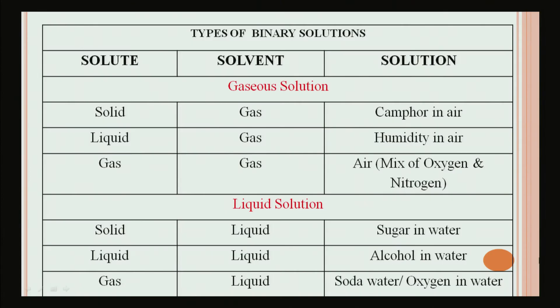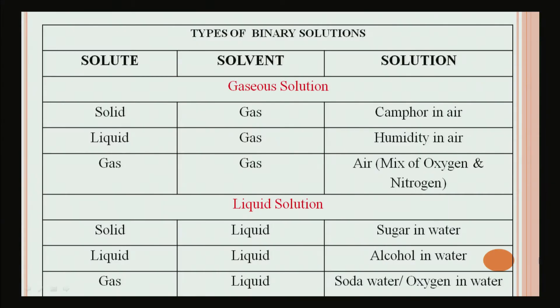Looking at the chart, solute and solvent together form a solution. In a gaseous solution, the solvent is in the gaseous state. For example, solid dissolved in gas — like camphor in air — is a gaseous solution. Another example is humidity in air, where liquid is dissolved in gas. Air itself is a mixture of oxygen and nitrogen, which is gas dissolved in gas.